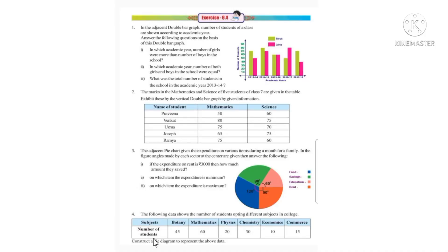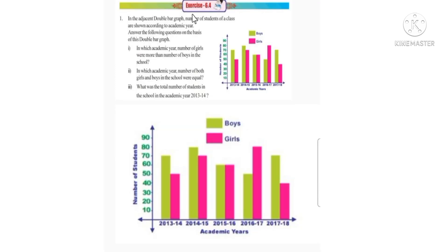We have gone to exercise 6.4. Let us see the first question from exercise 6.4. Look at the first question, children. In the adjacent double bar graph, the number of students of a class are shown according to the academic year.